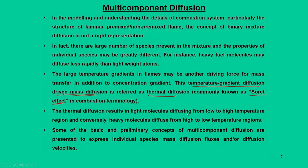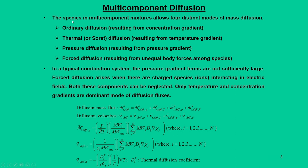Temperature gradient effects on diffusion — commonly referred to as thermal diffusion or the Soret effect — are another driving force in multi-component diffusion systems. Light molecules diffuse from low to high temperature regions, while heavy molecules diffuse from high to low temperature regions. In multi-component mixtures, there are four distinct modes of mass diffusion: (1) ordinary diffusion from concentration gradients (described by Fick's law); (2) thermal or Soret diffusion from temperature gradients; (3) pressure diffusion from pressure gradients; and (4) force diffusion from unequal body forces among species.